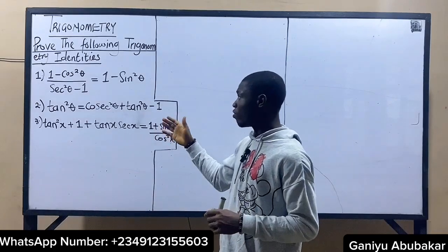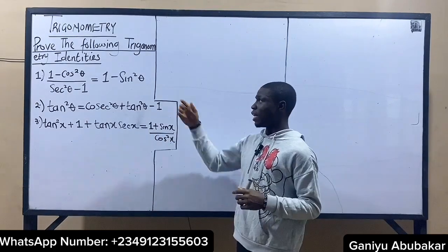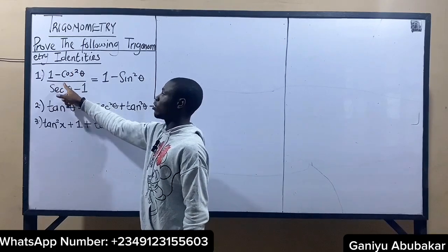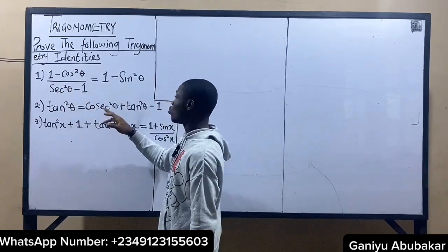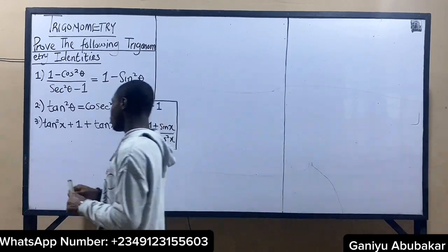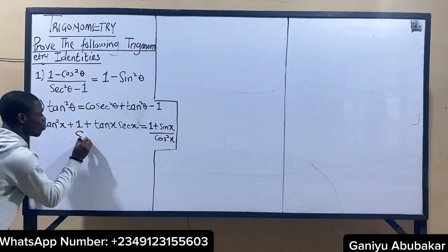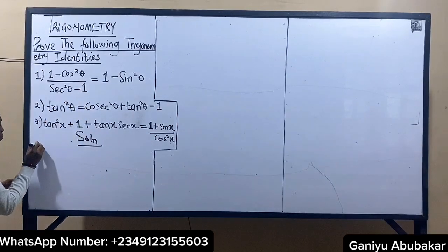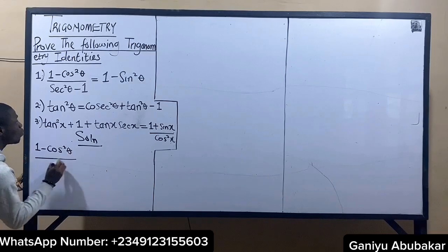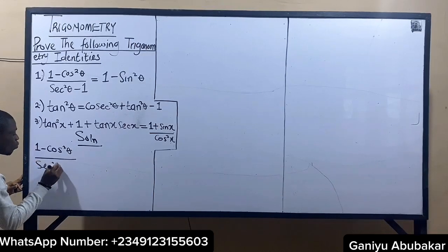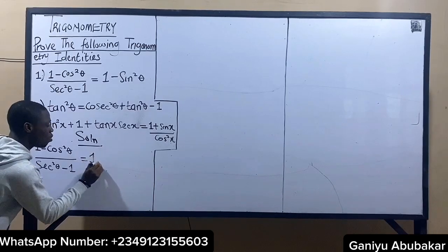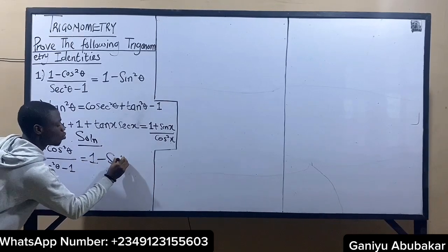Alright, let's dive into the solving of this problem. For the first one, I'm having that 1 minus cos squared theta, all over sec squared theta minus 1, is equal to 1 minus sin squared theta. How do you prove this?